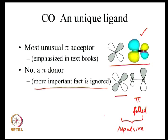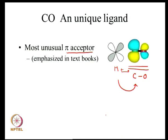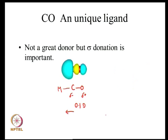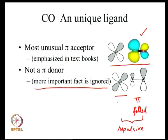It is the combination of three factors that make carbon monoxide unique: it is a good pi acceptor; it has sigma donation from the carbon end; and its pi donating property is minimized while its pi accepting property is maximized.